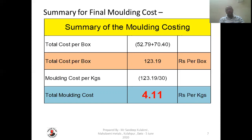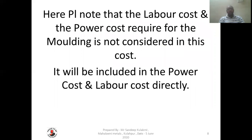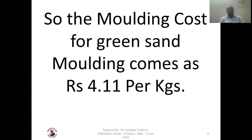This is the way you can calculate your molding cost in your foundry for any part — just replace the rates and additions and you can get this molding cost. Please note that the labor cost and the power cost required for the molding are not considered in this cost; they will be included in the power cost and labor cost directly. So molding cost for green sand molding comes around 4.11 rupees per kg for this DFG housing.